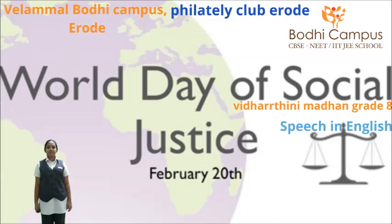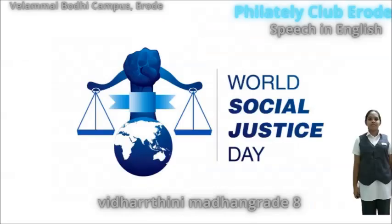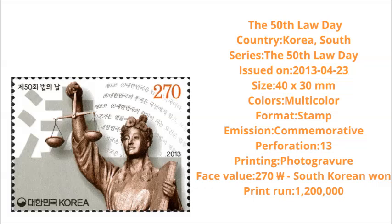The United Nations General Assembly has decided to observe 20 February annually as the World Day of Social Justice. This was approved on 26 November 2007 and starting in 2009 as the World Day of Social Justice. The declaration focuses on guaranteeing fair outcomes for all through unemployment, social protection, social dialogue and fundamental principles and rights.